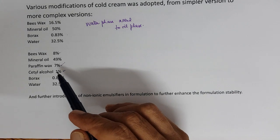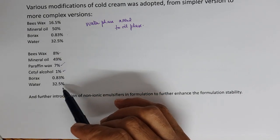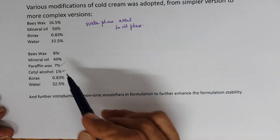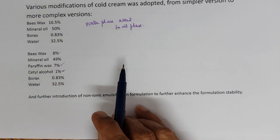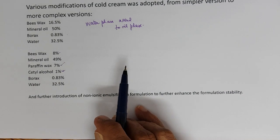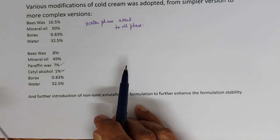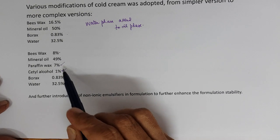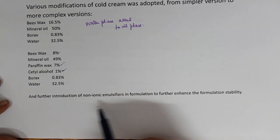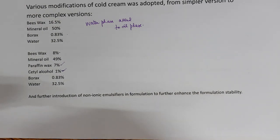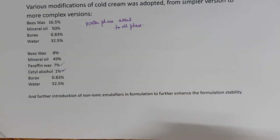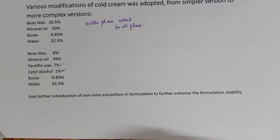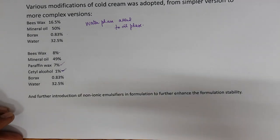In these formulations, spermaceti was excluded because it comes from the sperm whale and availability was a problem. Cetyl alcohol was included along with paraffin wax. Further evolution introduced non-ionic emulsifiers into the formula as well — the beeswax borax emulsion was additionally stabilized with non-ionic emulsifiers like Tweens and Spans.